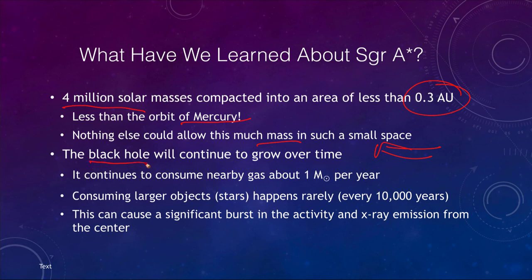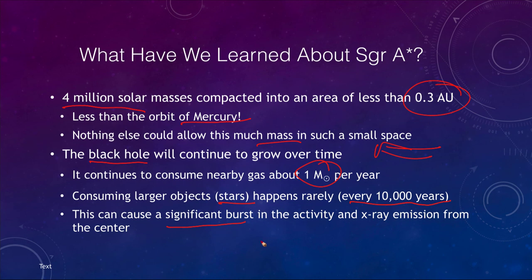This black hole will continue to grow over time, absorbing gas at the rate of about one solar mass per year. It will also consume larger objects like stars and gas clouds, though that happens more rarely — perhaps once every 10,000 years. When this happens, we get a significant burst of activity, with the black hole accreting more matter and increased X-ray emissions from the center of our galaxy.